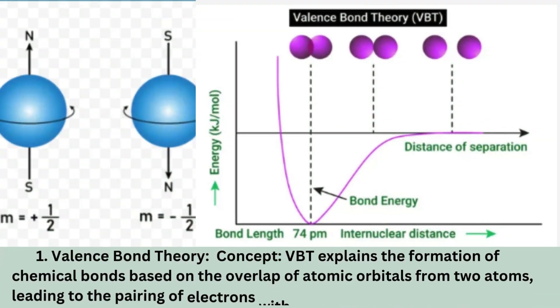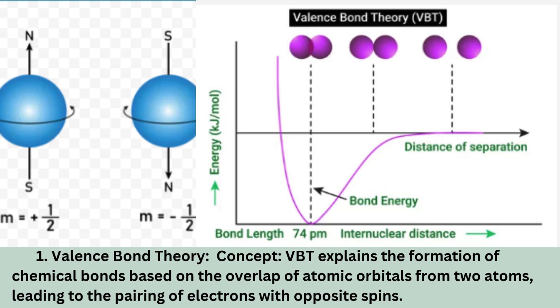Valence Bond Theory (VBT) Concept: VBT explains the formation of chemical bonds based on the overlap of atomic orbitals from two atoms, leading to the pairing of electrons with opposite spins.